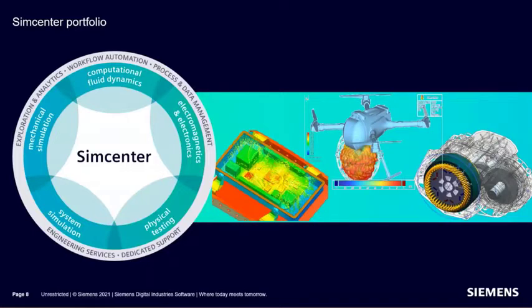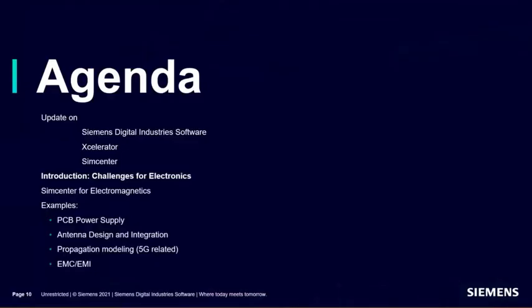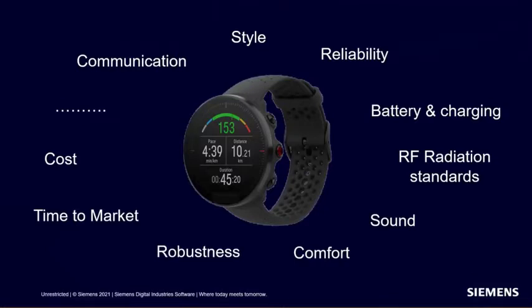I belong to the electromagnetics part, and electronics is going to be the focus of this webinar. This whole portfolio of Accelerator and SimCenter didn't come overnight — it is the result of a sizable investment by Siemens into best-in-class technologies. It started around a bit less than 15 years ago with the acquisition of UniGraphics, and then larger acquisitions like LMS, CD-adapco, MentorGraphics, and many more basically allowed us to build a portfolio of world-class, best-in-class products and a comprehensive digital twin portfolio. Let me now go into the scope of this webinar and discuss the challenges we see in electronics.